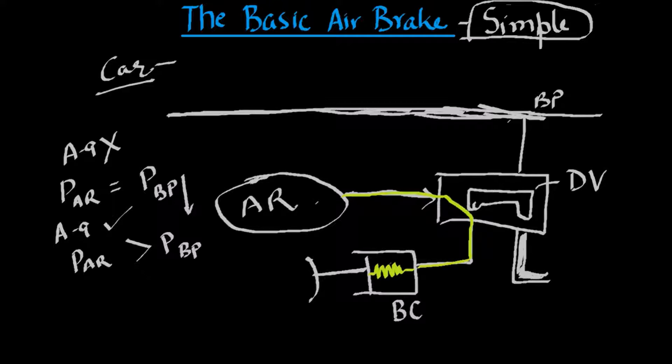This causes increased frictional force between the brake blocks and the wheel tread. This reduces the speed of the train. The brakes are now in the applied condition.